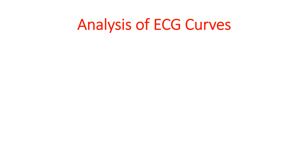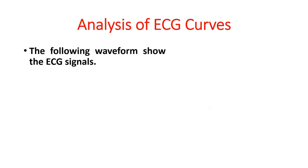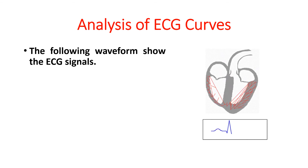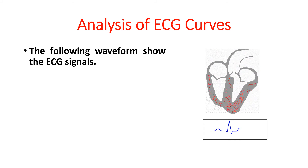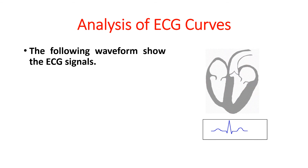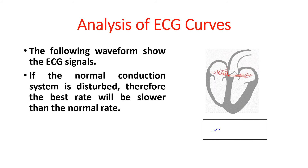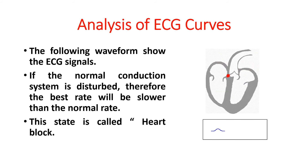Analysis of ECG curves. The following waveform shows the ECG signal generation and function. If the normal conduction system is disturbed, the heart rate will be slower than the normal rate. This state is called heart block. There are different types of heart blocks.